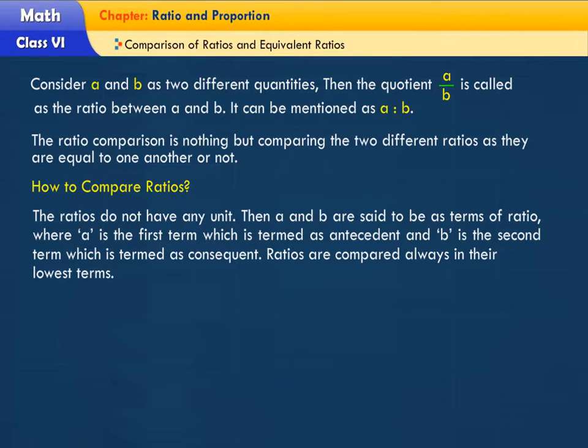The ratios do not have any unit. Then A and B are said to be as terms of ratio, where A is the first term which is termed as antecedent and B is the second term which is termed as consequent.